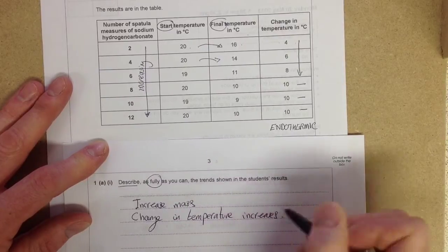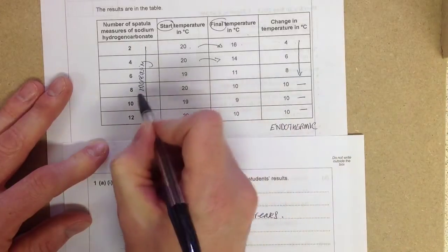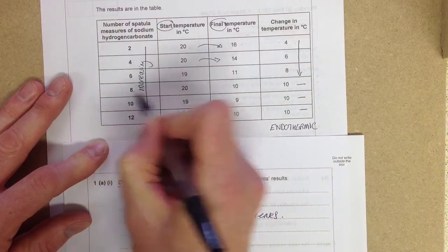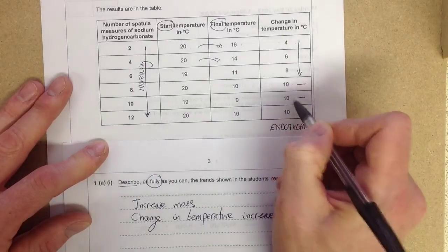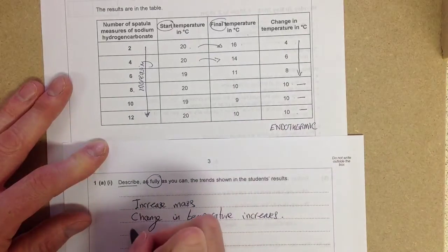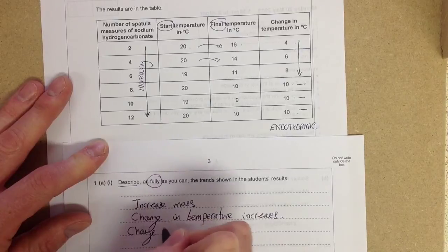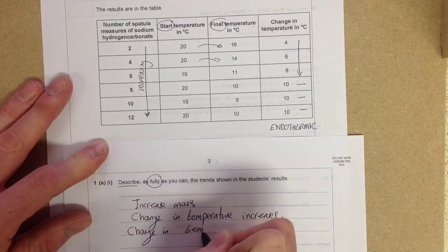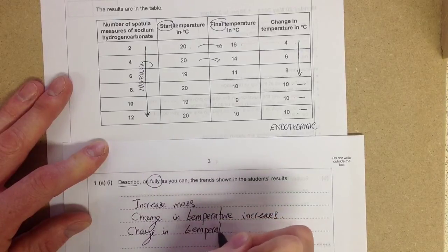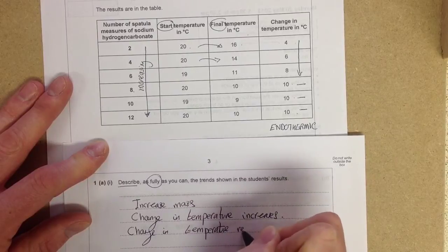Many students leave that as that, but if you look back up here, when you get to eight spatulas, nothing else increases - 10, 10, 10. So you can put down change in temperature remains constant.